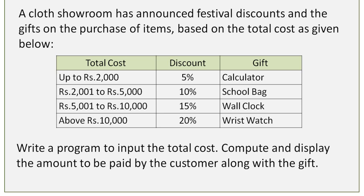If the total cost is above 10,000 then the discount percentage is 20% and the gift is a wristwatch. Write a program to input the total cost, compute and display the amount to be paid by the customer — that is, after reducing the discount amount, display the balance amount to be paid — along with the gift. So let's see the program.